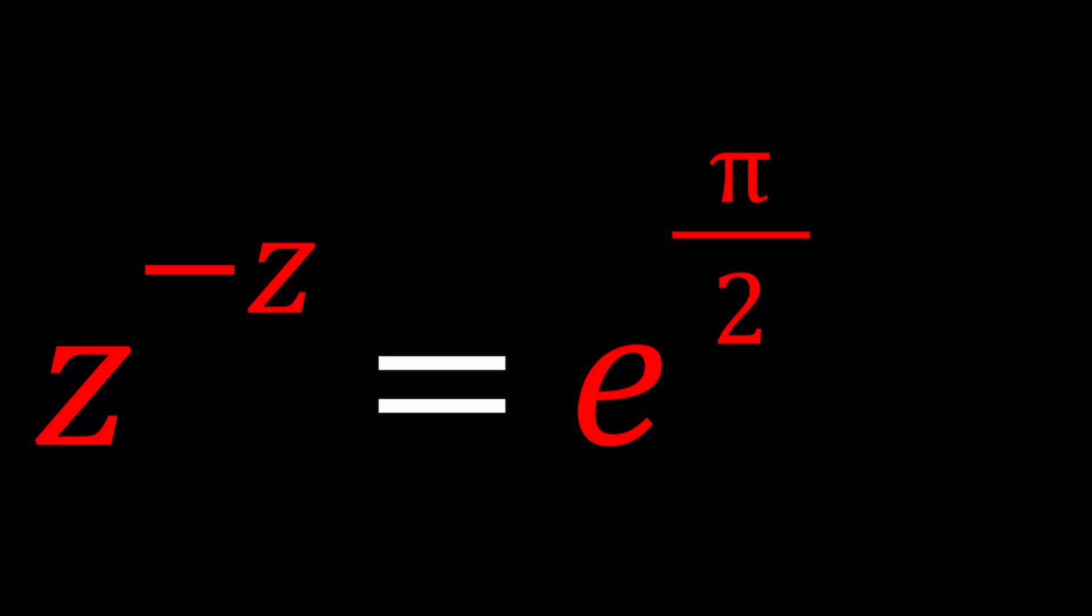We have z to the power negative z equals e to the power pi over 2. I apologize if I did this problem before because that kind of looks familiar. Anyways, let's go ahead and find some solutions and then we're going to check on something.